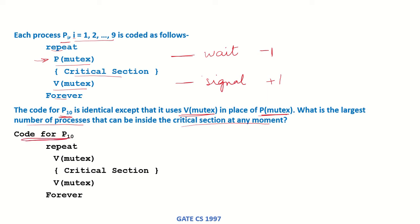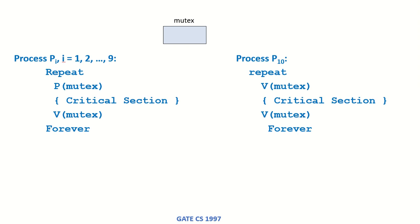So p10's code has V(mutex) — again a signaling operation — in place of P(mutex). Let's say the initial value of mutex is 1. Process p1 wants to enter the critical section, so it executes P(mutex), which decrements mutex by 1. Now mutex is 0, and p1 enters the critical section.